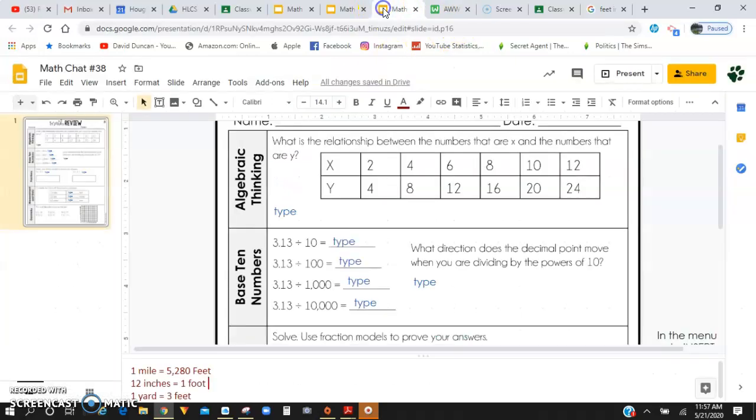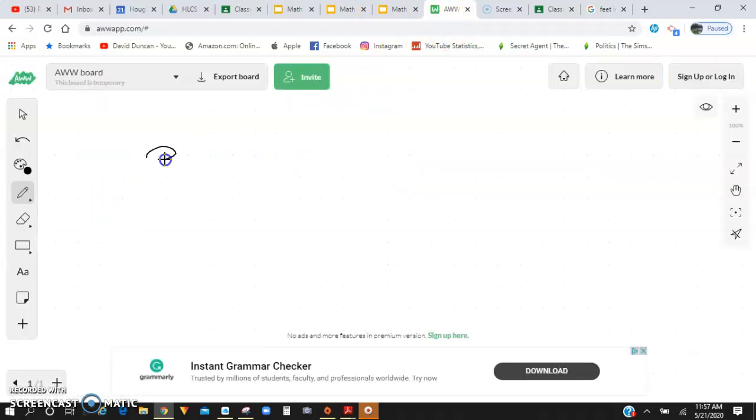So I believe it was 3.13, yep. So we're going to have 3.13 divided, I'm sorry, not multiplied. We're going to divide it by 10. And when we are dividing, we are moving that decimal to the left. I'm moving it to the left only one time because I only have one zero.